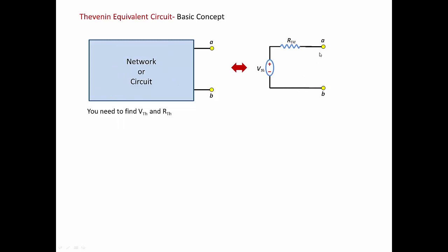By making the circuit open circuit at the load, we know that the current going into this open circuit is zero. My objective is to find V-Thevenin, and the way to find it is by saying that V-Thevenin will be the same as the voltage across the load. Because the current is zero, the voltage across R-Thevenin is zero. By doing KVL: minus V-Thevenin plus zero (since current is zero) plus VOC equals zero. So V-Thevenin equals VOC because the current is zero.